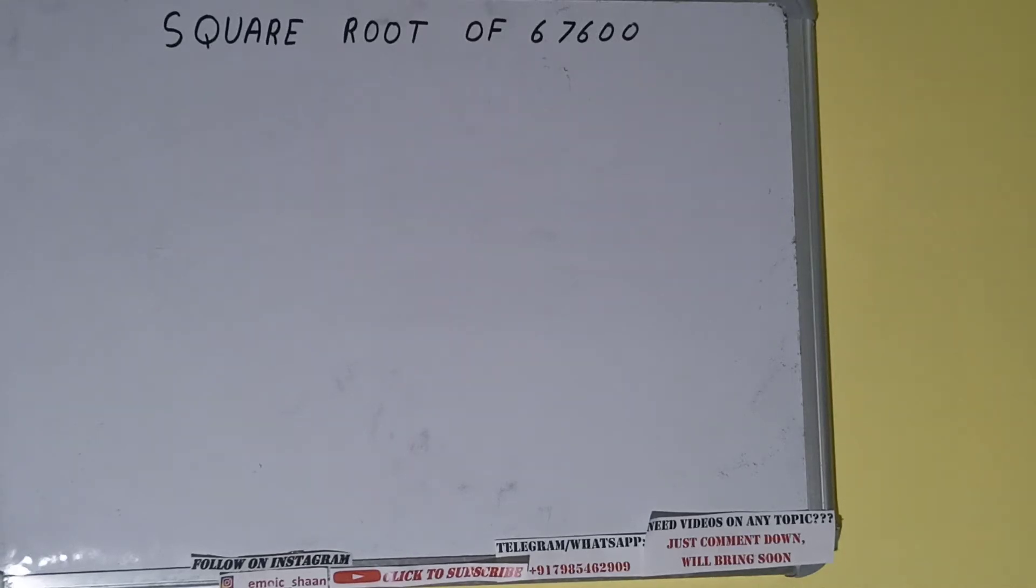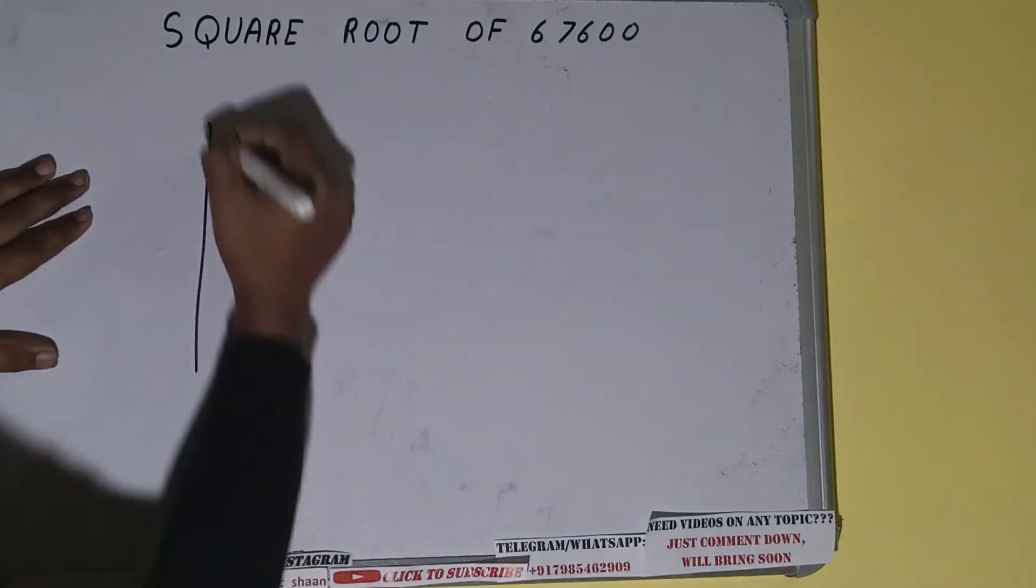Hello friends, and in this video I'll be helping you with the square root of the number 67600. So let's start. First of all, we need to write the number like this: 67600.